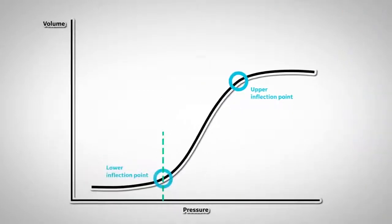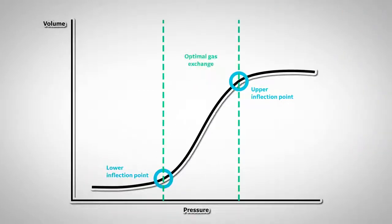The goal is to minimize changes between the upper and lower inflection points as this ensures optimal gas exchange at the alveolar level.